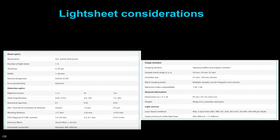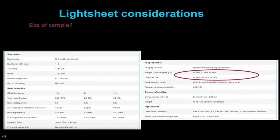Now to some considerations if you want to get into light sheet microscopy. First, the size of the sample. If you're only planning to image up to maybe 100 microns of thickness, you may even use a confocal microscope. But if you have whole organs from mice and so on, then you can benefit from using light sheet microscopy.